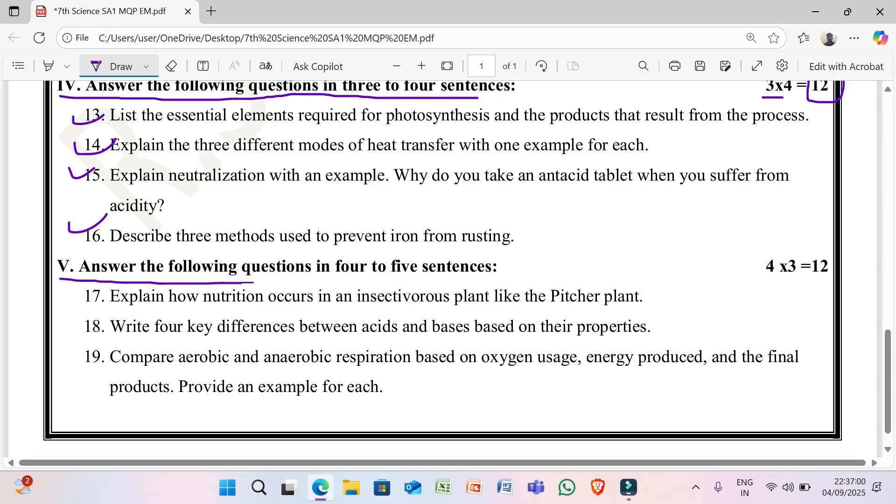5th question, answer the following questions in 4 or 5 sentences, total questions 3, each question 4 marks, total marks 12. 17th one, explain how nutrition occurs in an insectivorous plant like the pitcher plant.